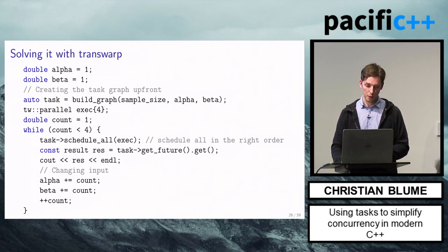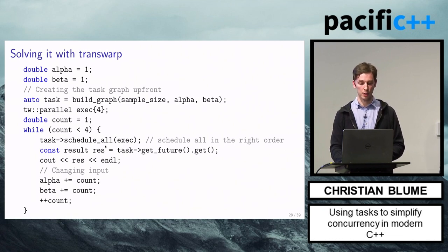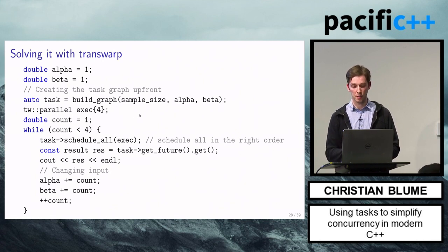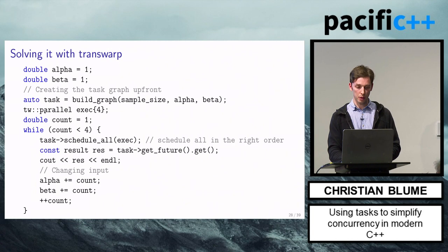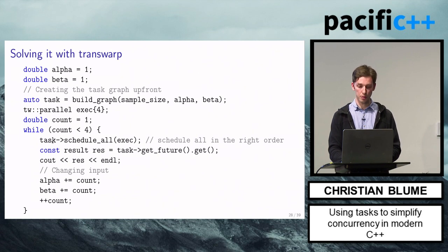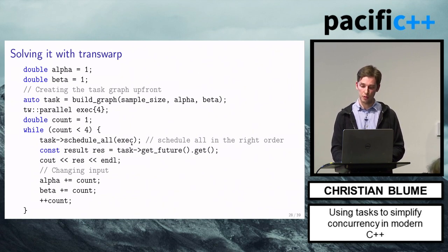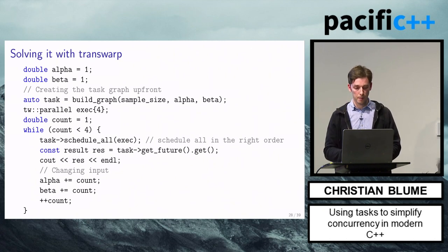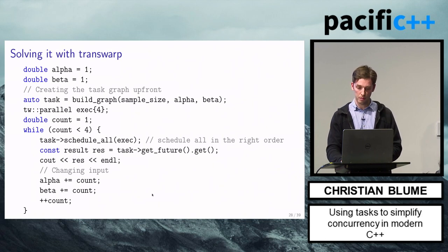Now let's see what this looks like with Transwarp. With Transwarp, we create the task graph up front, so instead of having a 'compute_graph' function inside the while loop, it's now outside called 'build_graph'. It also doesn't take an executor because it's independent from execution at this point. We create a thread pool and call 'schedule_all' on the final task retrieved from 'build_graph', passing in the executor. This schedules all functions in the right order, starting at the top of the graph and trickling down. Let's check out 'build_graph'.